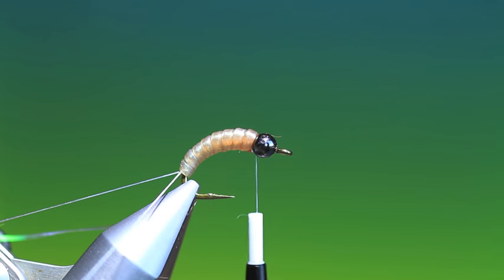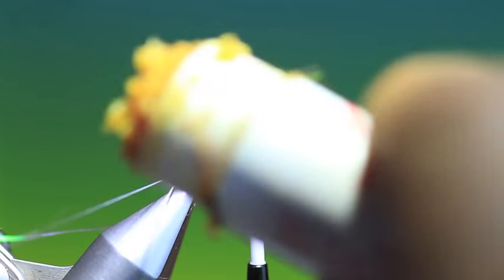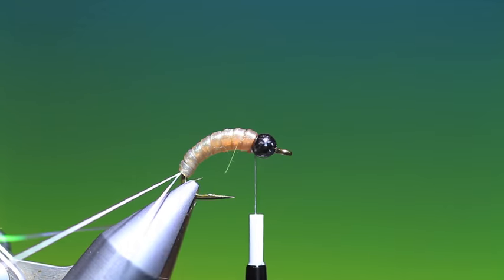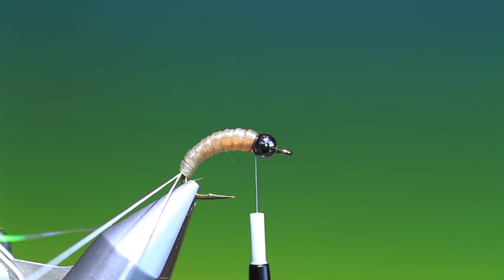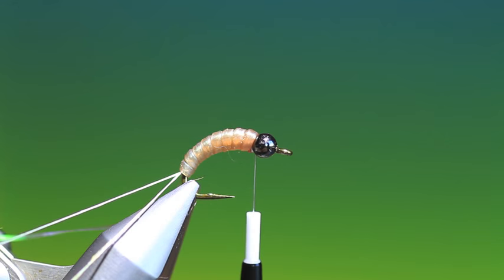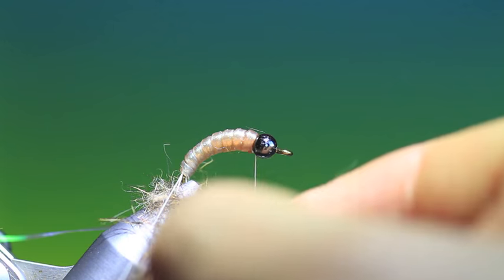Now we take our dubbing loop and we have to wax this now, because if we don't wax it our material will fall out. Wax the hare's ear dubbing like so. Then we take some pre-prepared hare's ear dubbing. You want this placed quite high in the dubbing loop because we don't want much thread showing after we spun it up.